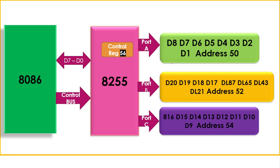For each condition, we place the corresponding data on Port A, Port B, and Port C. Then we generate a delay to allow time for the traffic to move. After the delay, we load the next condition's data and repeat the process.